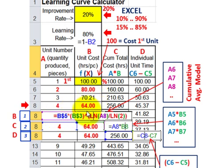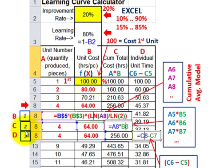Now let's set up the Excel calculations. For column B, the unit cost, we have to put in the function F(x). I've got the different formulas for each column matched up — formula 1 represents column B, formula 2 represents column C, and formula 3 represents column D.